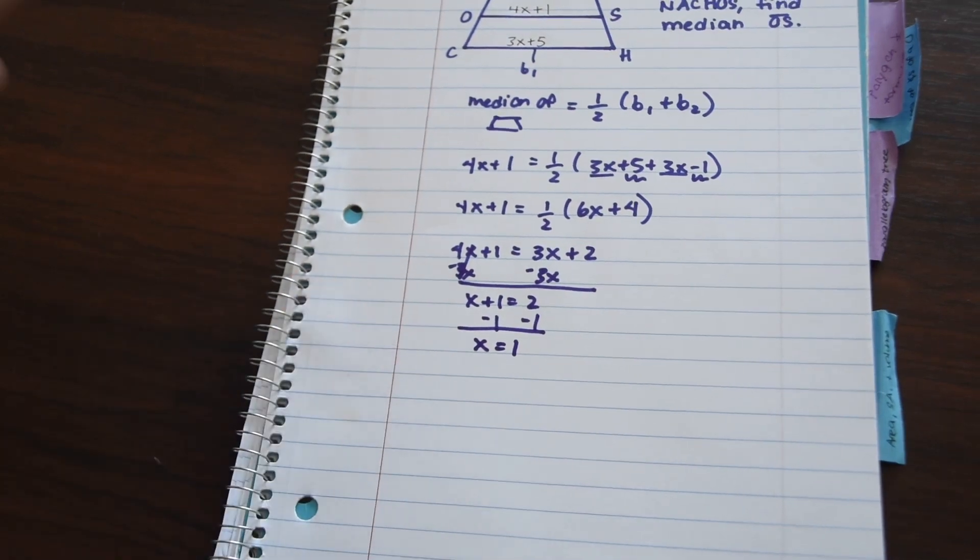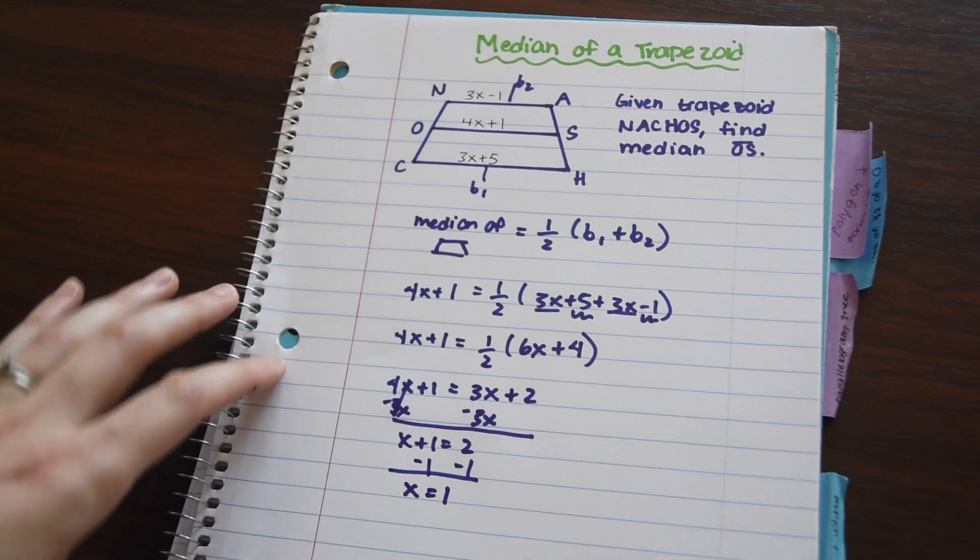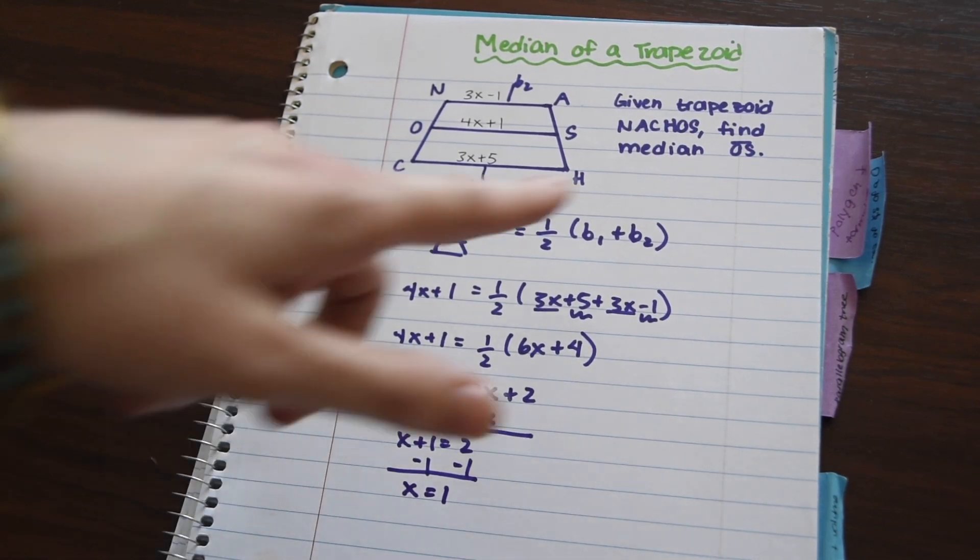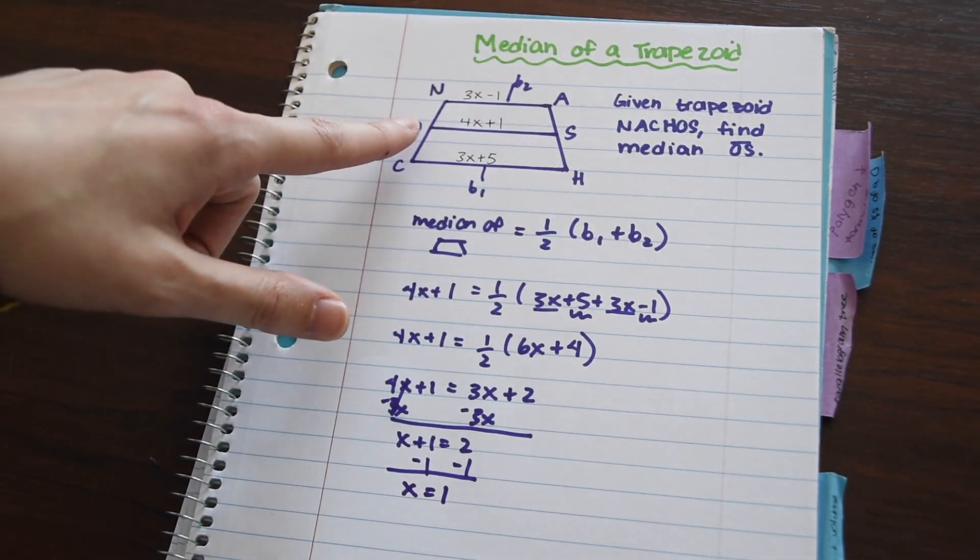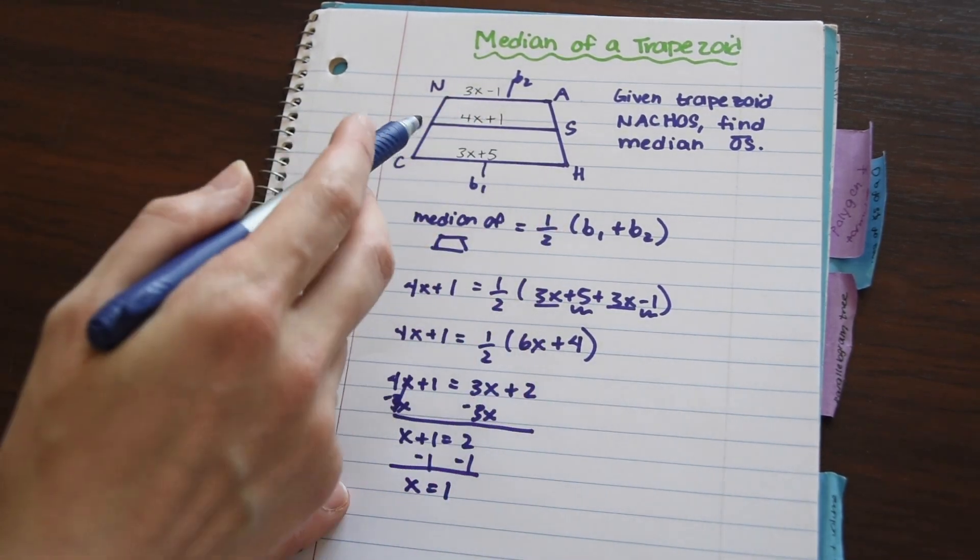So, okay, great, we found X equals 1, but that wasn't the original question they were asking, right? They want to know the value of the median, OS. So now that we know the value of X, we can plug that into the value of the median.